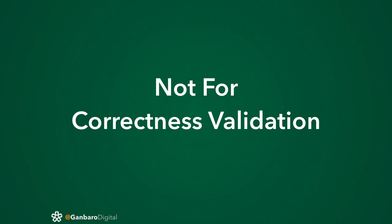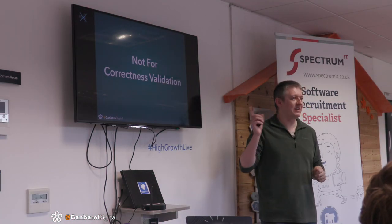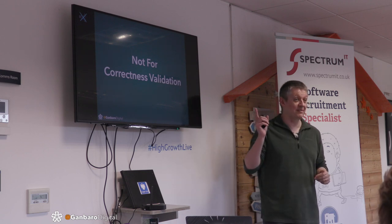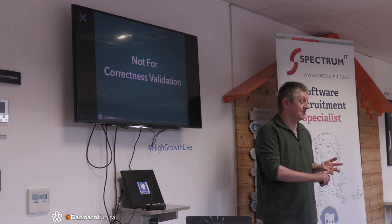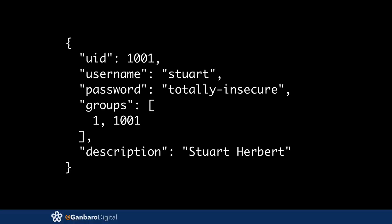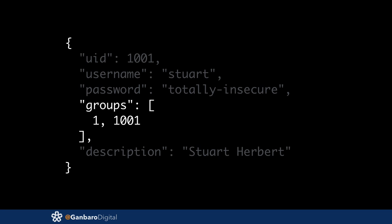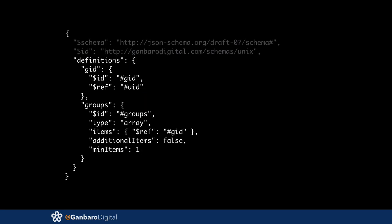We are not doing correctness validation — this is one of the areas where people try too hard with JSON Schema. JSON Schema supports if-then-else logic in schemas, which I don't use at all. What we're actually doing here — focusing on the groups array which is an array of group IDs, all integers — we can easily write a schema for that. There's nothing you can't go look up and instantly drop in.